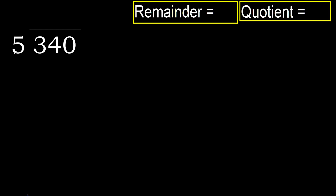340 divided by 5. 3 is less than 5, therefore move to the next digit. 34 is not less, so we work with 34. 5 multiplied by which number is nearest to 34 but not greater? 5 multiplied by 7...